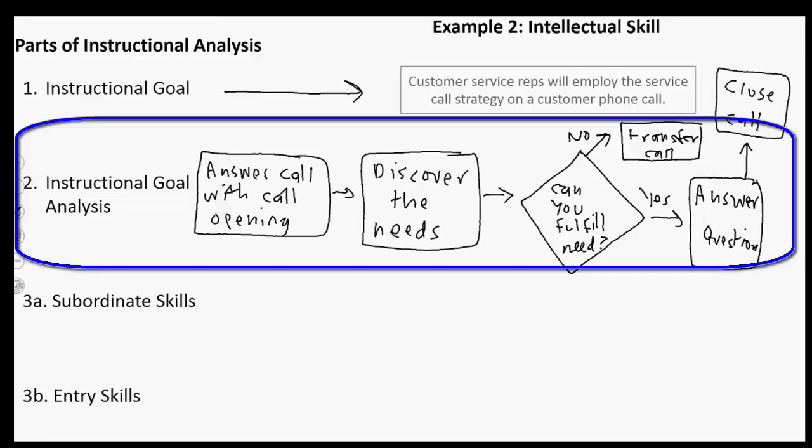So this is my draft of our instructional goal analysis. Now even as I look at this, it's not perfect because the can you fulfill the needs? If it's a no, maybe they would need to transfer the call, but they might need to also just tell them, we don't have that information or I can't do that request for you. And sometimes answering the question is not the only thing you need to do. Maybe there's some other action that needs to be taken. So I can already tell that this isn't a perfect instructional goal analysis, but it's a start.